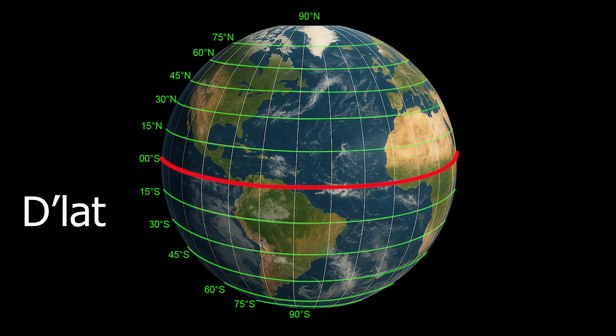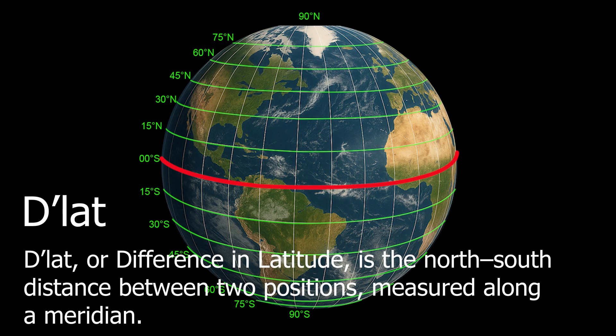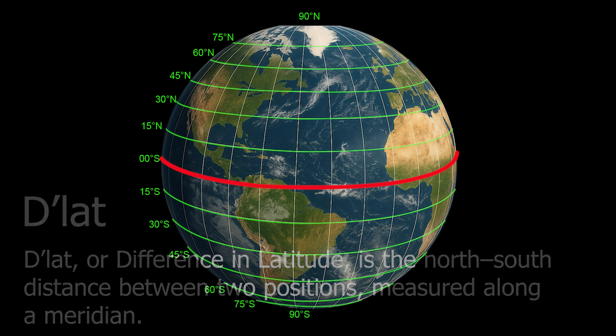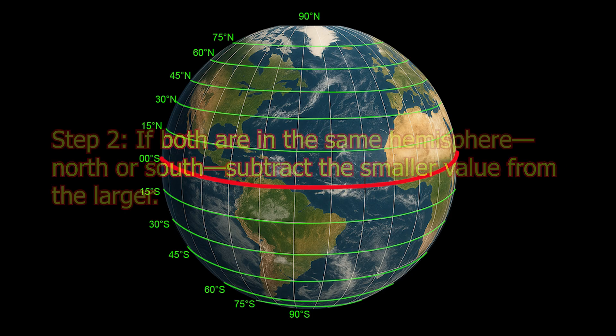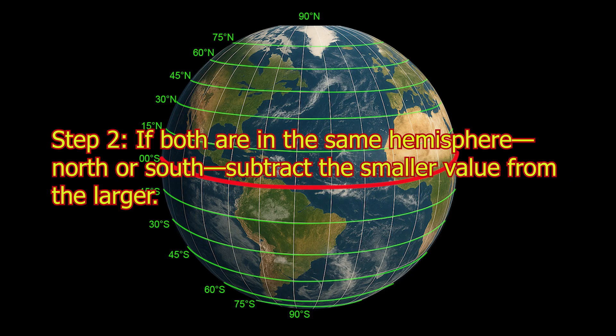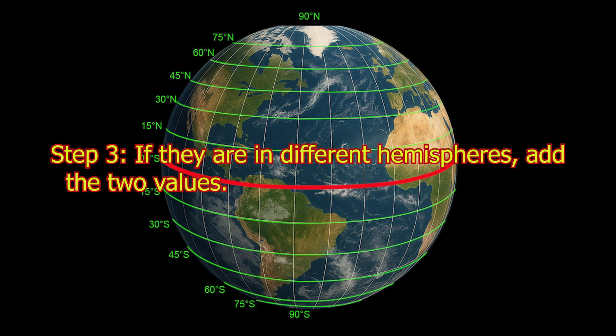Now let's talk about D-lat. D-lat, or difference in latitude, is the north-south distance between two positions measured along a meridian. Here are the steps to find it: 1. Write down the latitude of both positions. 2. If both are in the same hemisphere, north or south, subtract the smaller value from the larger. 3. If they are in different hemispheres, add the two values.